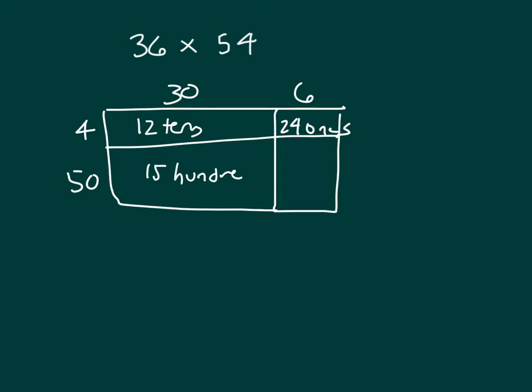Remember, we multiply tens times tens, we do get hundreds. And we have 5 tenths times 6, which equals 30 tenths.